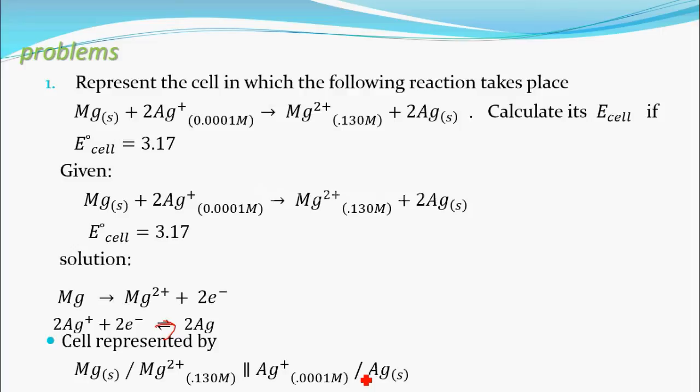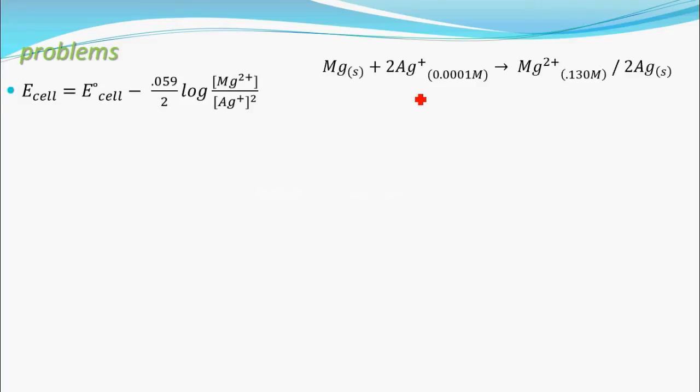Now you have to calculate E cell. Given this reaction, E cell equals E° cell minus 0.059 divided by 2. Why? Because 2 is the number of electrons transferred. Mg is converting into Mg²⁺, and by 1 Mg atom, 2 electrons are transferring, so divide by 2 times log of...